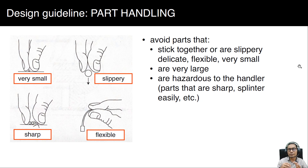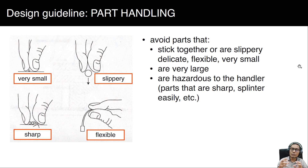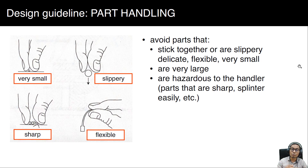When doing assembly, you have to handle the parts. Avoid parts that stick together or are slippery, delicate, flexible, or very small. Also avoid parts that are very large or hazardous to the assembler or operator — such as parts that are sharp or splinter easily. Consider these guidelines when designing: very small parts are hard for fingers to handle, and slippery, flexible, and sharp parts are both difficult and dangerous.